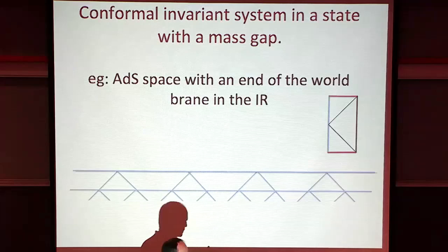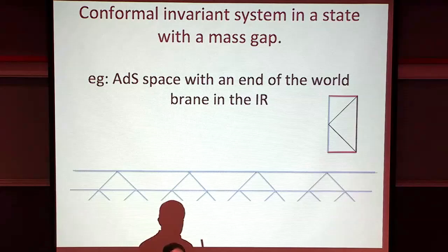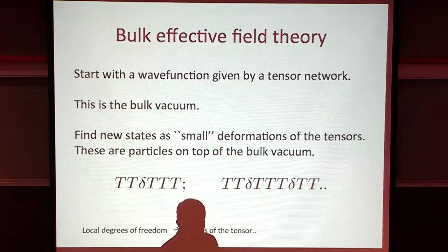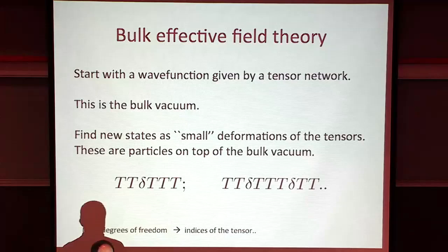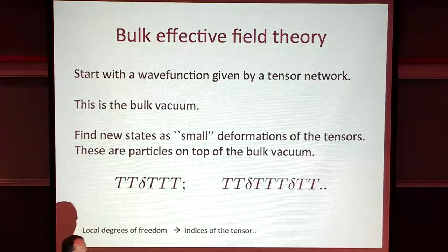In a situation like this, one can make it extremely precise and say exactly what state it is in the boundary theory. That state corresponds to a boundary state in the sense of D-branes. The idea is that if we want to recover bulk effective field theory, we would start with a given tensor network representing the particular state we have. That would be what we call the ground state of the effective field theory - we start with a particular state and describe small fluctuations around it.